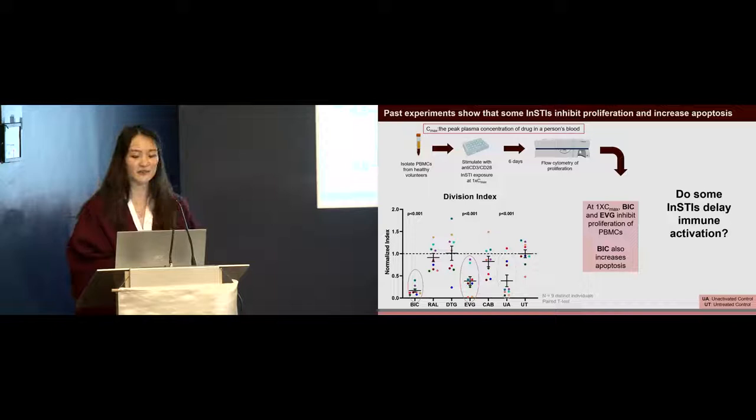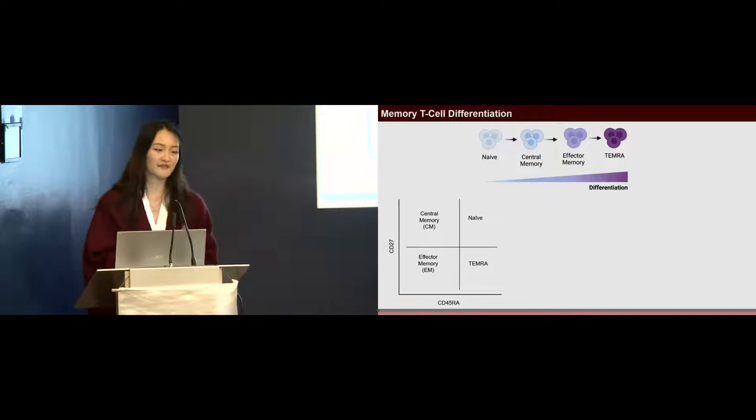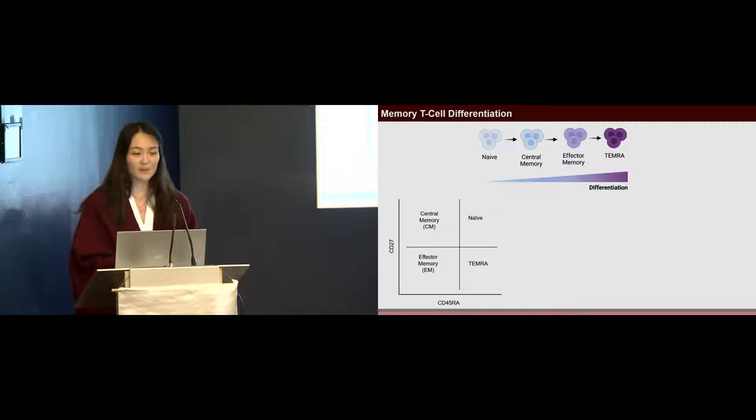Before we look into that, one measure of immune activation is T cell differentiation. T cells differentiate from naive to central memory to effector memory and TEMRA. On the schematic below, naive cells express both CD27 and CD45RA and are in the top right quadrant. As they differentiate into central memory cells, they lose the CD45RA. As they continue to differentiate, they lose both markers. Once they are terminally differentiated or TEMRA, they regain the CD45RA marker.